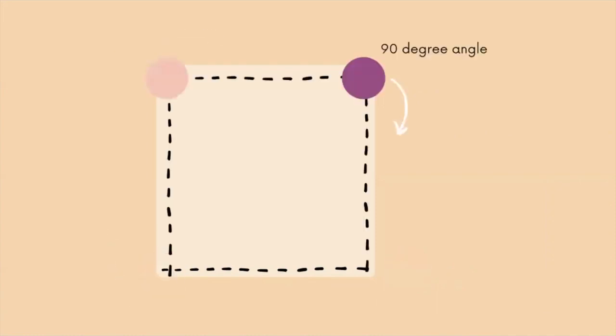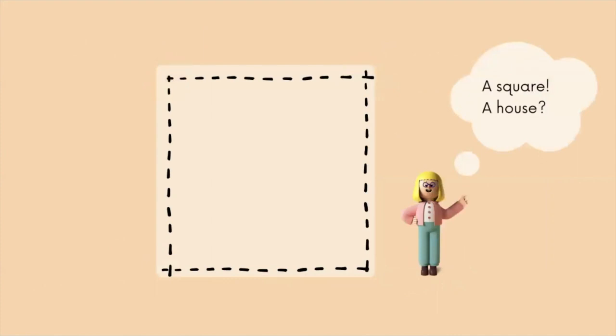For example, by programming a robot to perform 90-degree angles four times, children can better understand the formation of a square and start understanding the connection between geometry and squared objects and even houses.